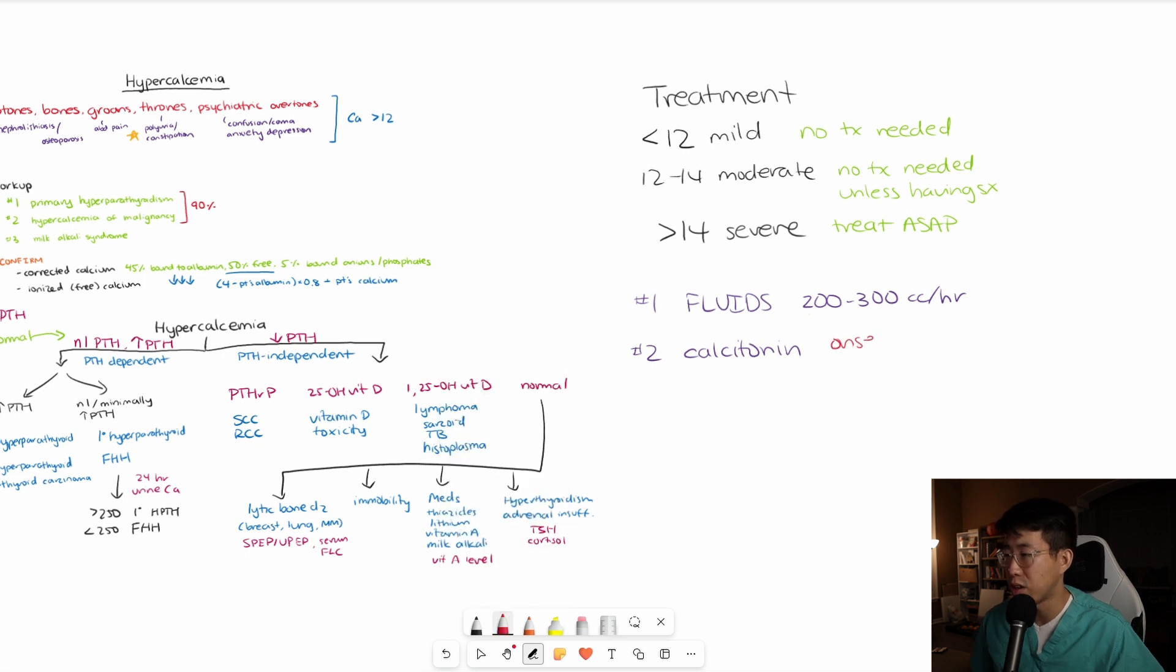This one generally takes four to six hours to work. Onset in four to six hours. But what's really important to note is that it develops tachyphylaxis, which means that over time, it stops working. For this specific medication, the tachyphylaxis occurs around 48 hours. At 48 hours, it loses all efficacy. That brings us to our number three treatment, which is IV bisphosphonates.